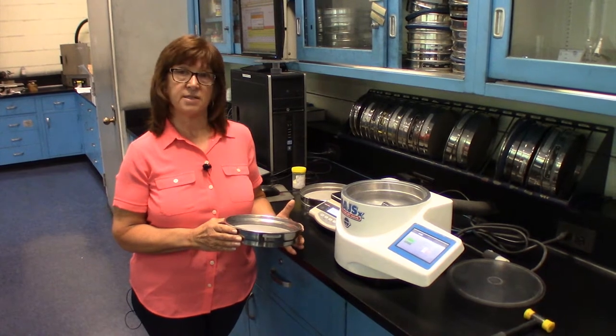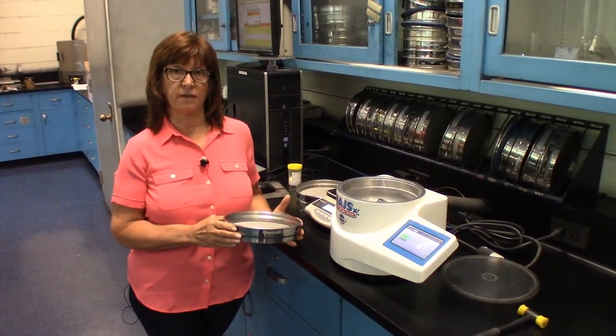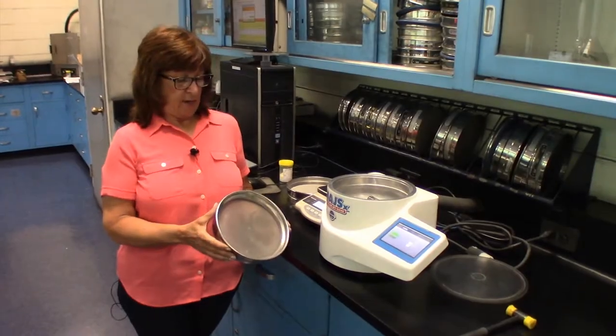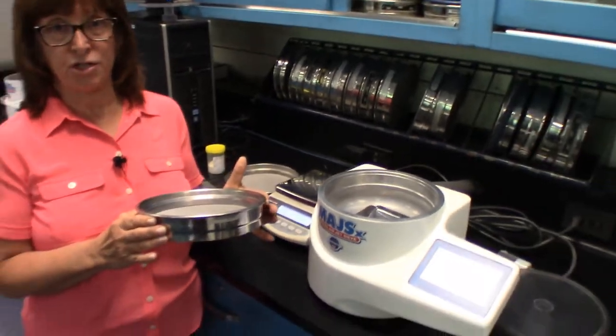Today we're going to be doing an analysis with coffee creamer on the MAJS-XB, which is a basic version of the JetSiv. The screen I'm going to use today is a 200 mesh screen and I will be using a 120 mesh screen.